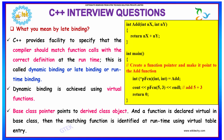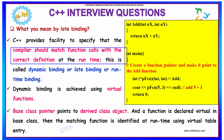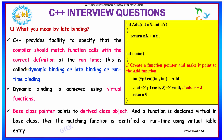What is meant by late binding? C++ provides a facility to specify that the compiler should match function calls with the correct definition at run time, and this is called dynamic binding, late binding, or run time binding.